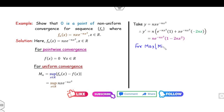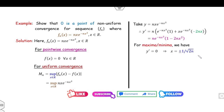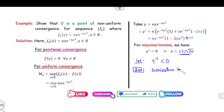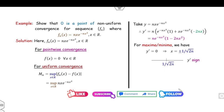To determine which critical point is a maximum, use the first derivative test instead of the second derivative. A point x₀ is a maximum if y' changes sign from positive to negative through that point, and a minimum if it changes from negative to positive. We check the sign of y' = n · e^{−nx²}(1 − 2nx²). Since n and e^{−nx²} are always positive, the sign depends only on (1 − 2nx²).